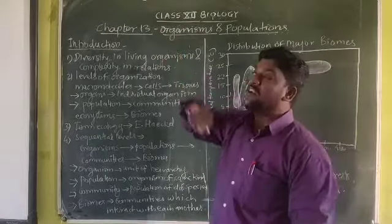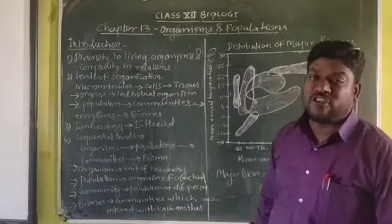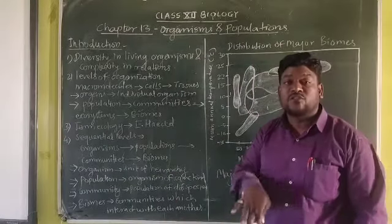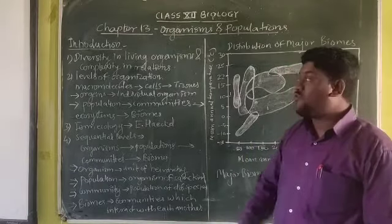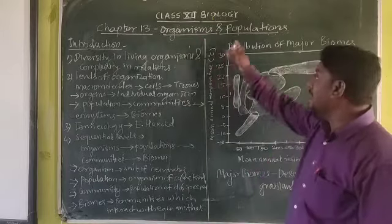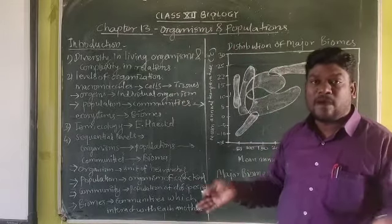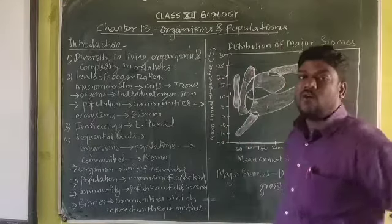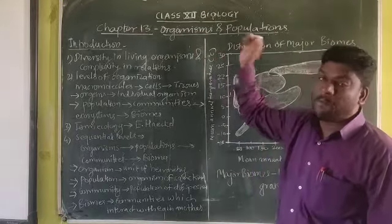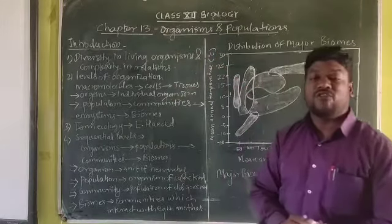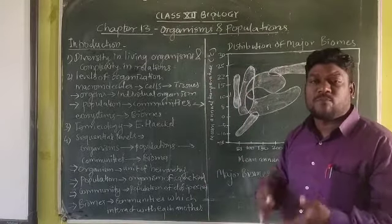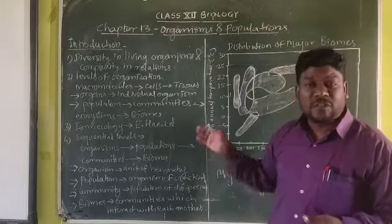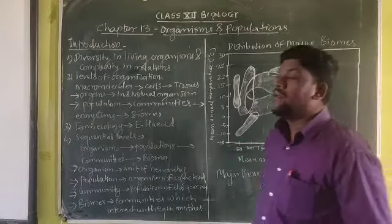Now chapter number thirteen — Organisms and Population. First, we need to clarify the meaning of the chapter. What does 'organism' mean, and what is 'population'? Both words are familiar to us. An organism — consider ourselves, that is the organism. Population means the collection of the same species; the collection of humans is called the human population. That is a simple idea about this chapter.